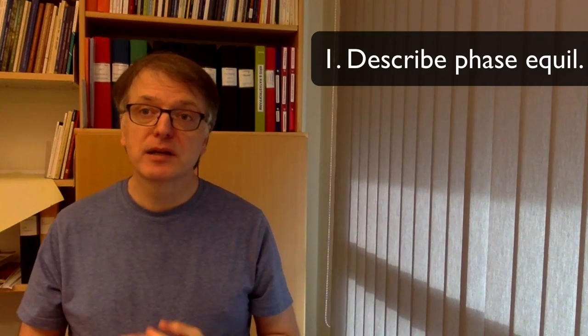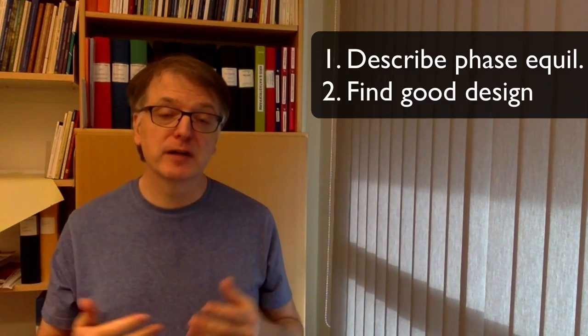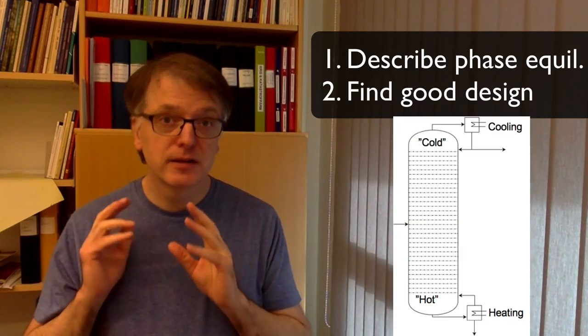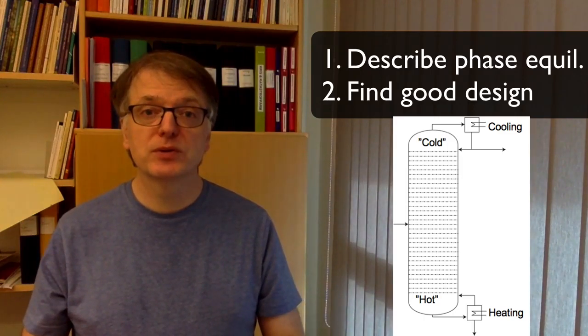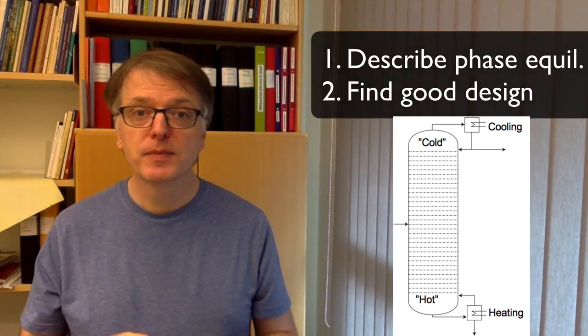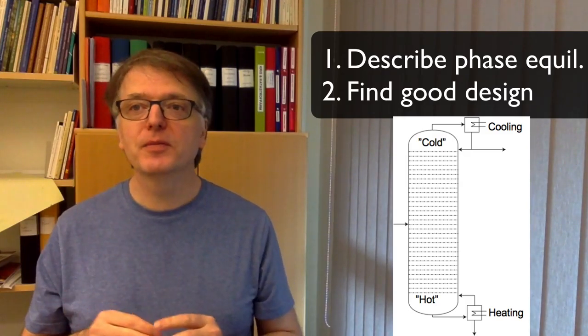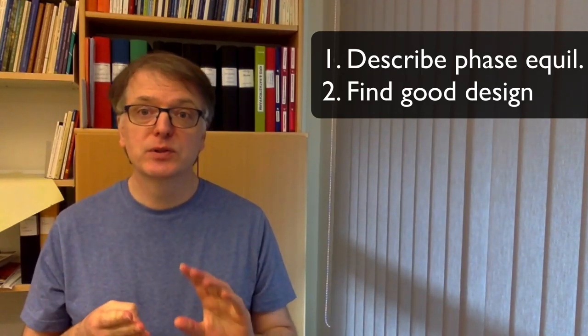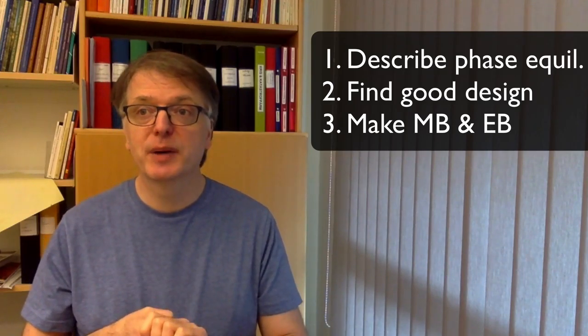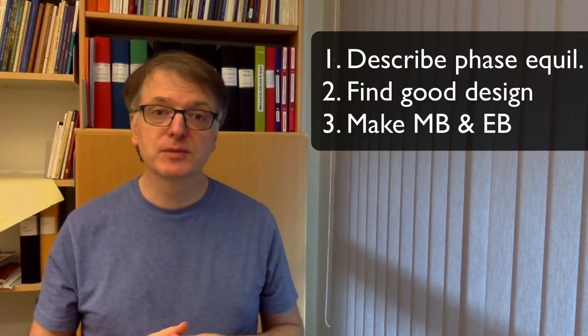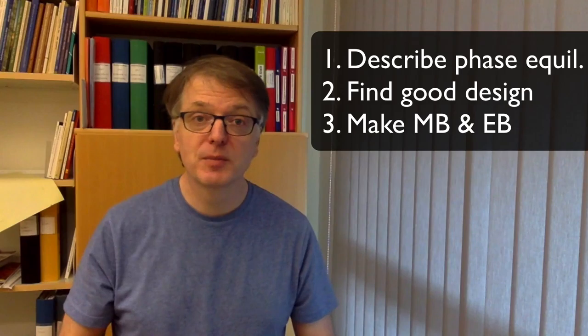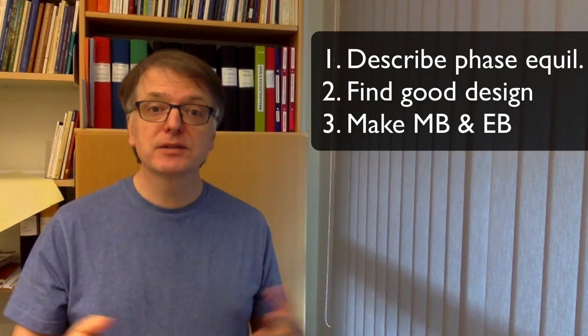The second thing we need is to find a good design. In this course, we will use continuous distillation columns. There are other options. We will look at them very briefly. And the third thing we need to do is make mass balances and energy balances of these systems. You have now been able to do a total balance for the total system, but we need to make that more carefully.